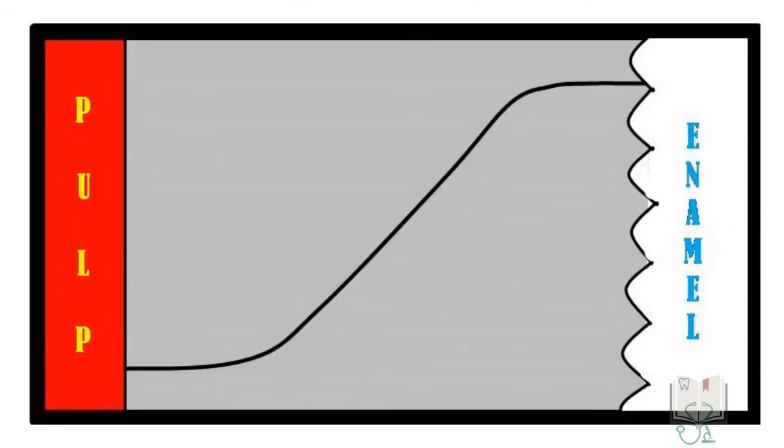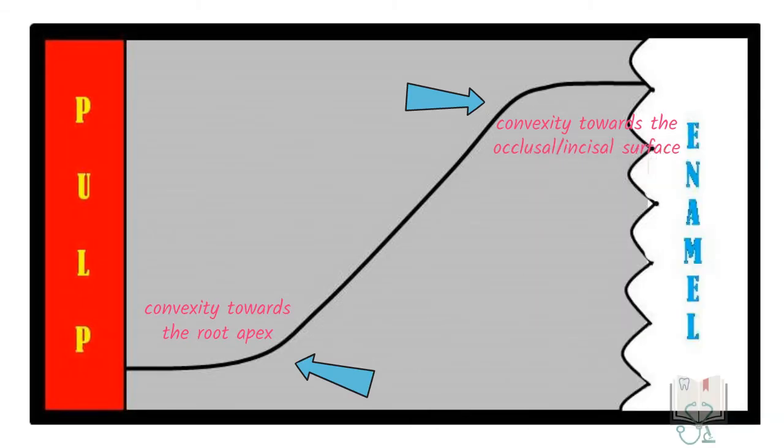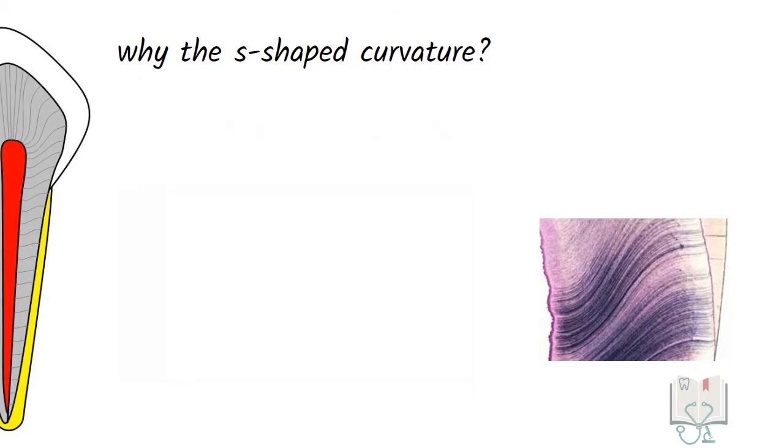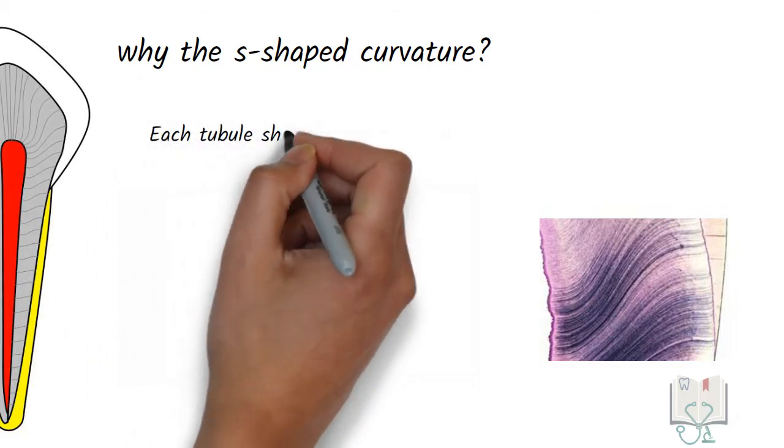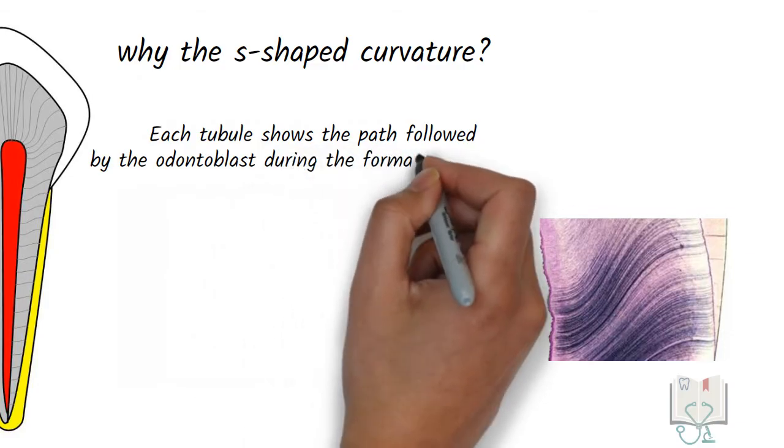The curvature closer to the pulp has its convexity towards the root apex whereas the curvature away from the pulp has its convexity towards the occlusal or incisal surface. Now why this S shape? For that we should understand that each tubule actually shows the path followed by the odontoblasts during the formation of dentine.